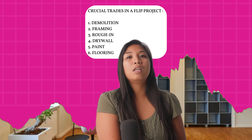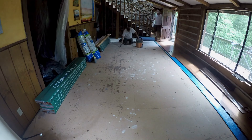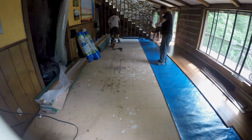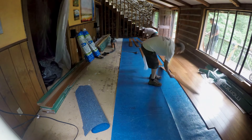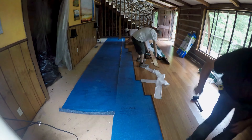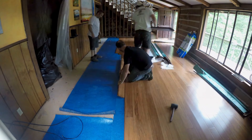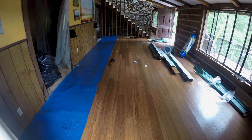Now that you're all painted, number seven is flooring. You'll need to install flooring and baseboard. Whether you're installing carpet, LVP, or tile, it's important you get all the flooring down before adding any appliances or cabinets.